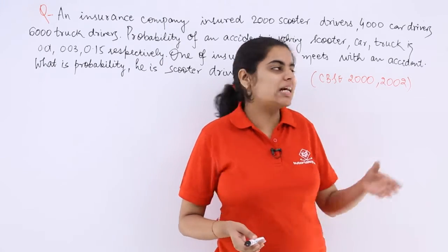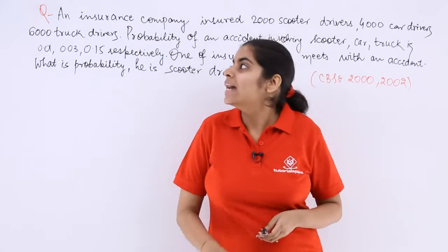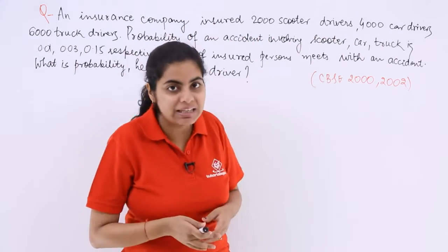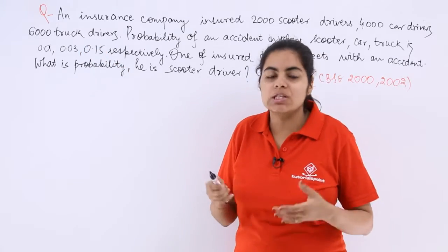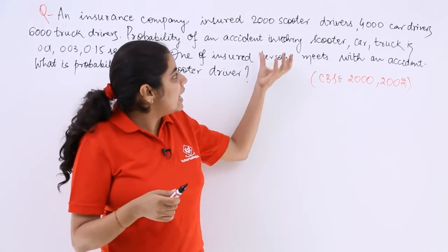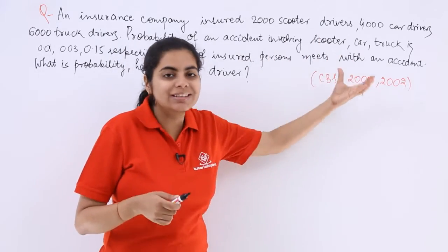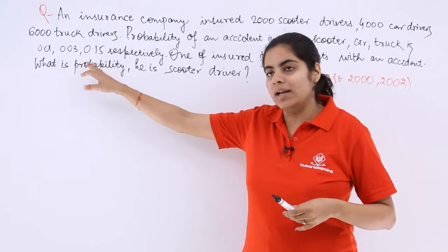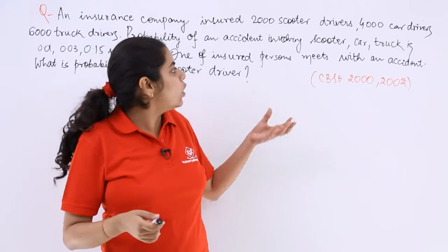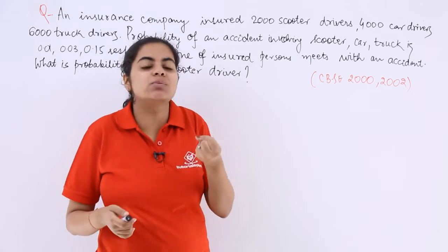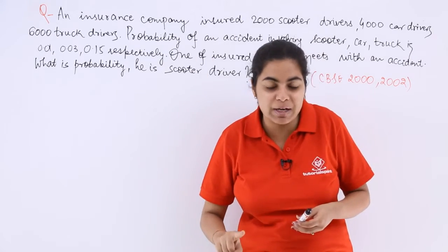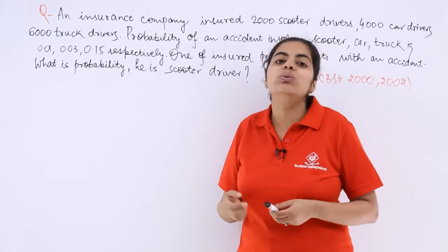This is a question of prime importance asked in the year 2000 and 2002. An insurance company insured 2000 scooter drivers, 4000 car drivers, and 6000 truck drivers. The probability of an accident involving a scooter, car, and truck is 0.01, 0.03, and 0.15 respectively. One of the insured persons meets with an accident. We have to find the probability that the person who met with an accident was a scooter driver.